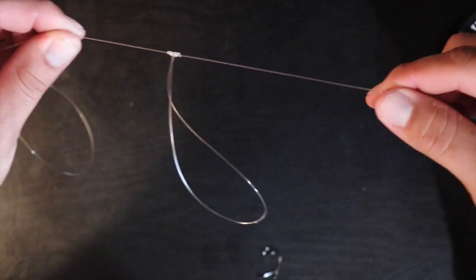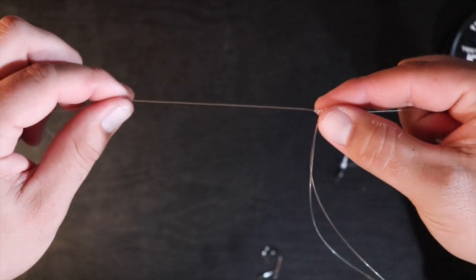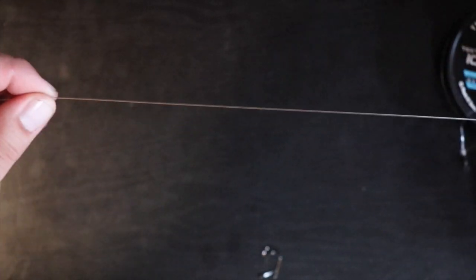So after you pinch that and pull it tight, that is going to create that first dropper loop there. Again, roughly 12 inches or so from the top. And now we're just going to do the exact same thing. Hold your first finger here, go down another 12 inches or so, do your pinch.